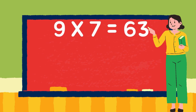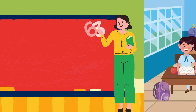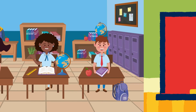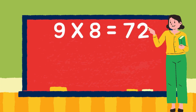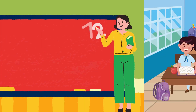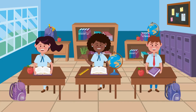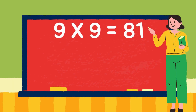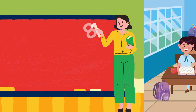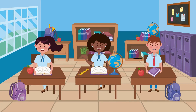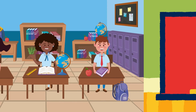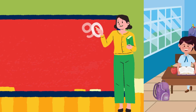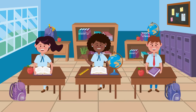9 times 7 is 63. 9 times 8 is 72. 9 times 9 is 81. 9 times 10 is 90.